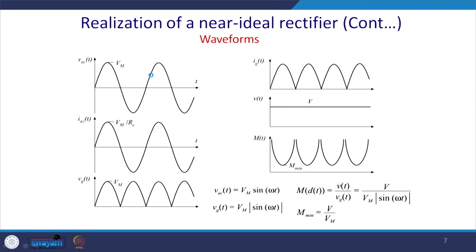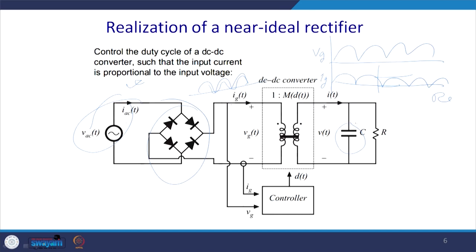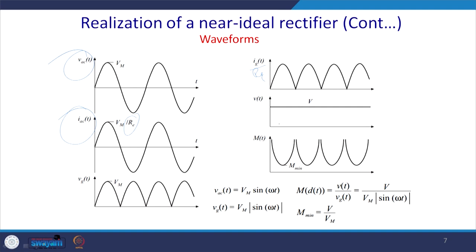Here are a few waveforms. The input voltage is applied, and we want the AC current to be Vm divided by the effective resistance. Vg is drawn and Ig follows Vg scaled by Re. Re can be more or less than 1, varying the magnitude of Ig. The output voltage is a DC value, and the DC current IDC is also constant.